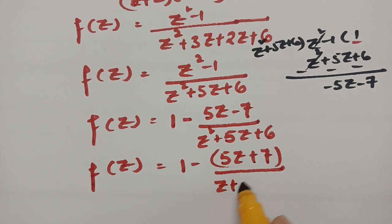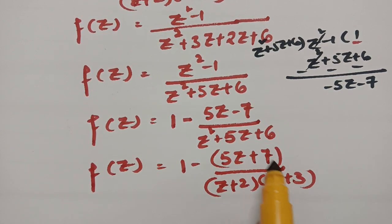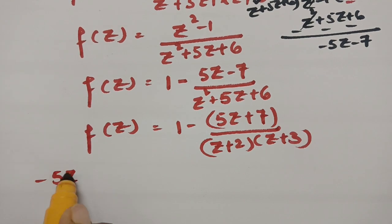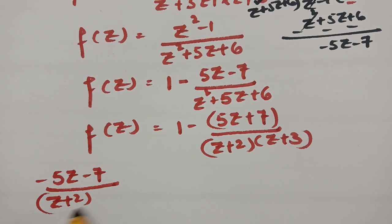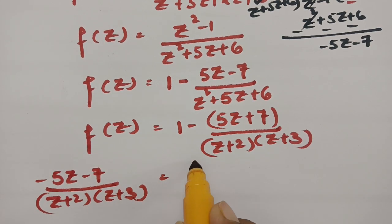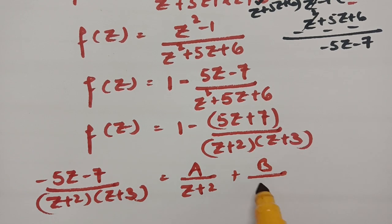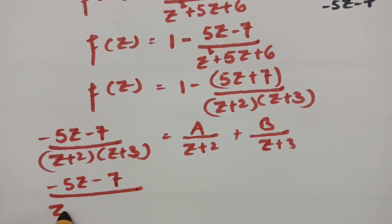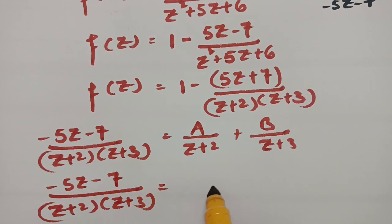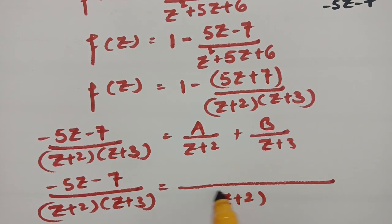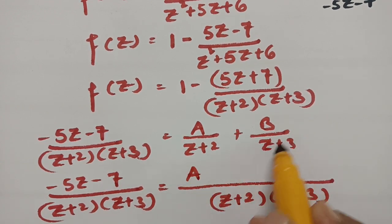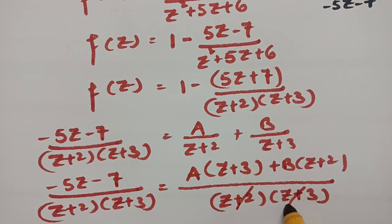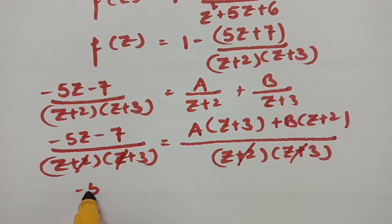Resolving (5z + 7) / [(z + 2)(z + 3)] into partial fractions, we write it as A/(z + 2) + B/(z + 3). Taking LCM, we get (5z + 7) = A(z + 3) + B(z + 2). After cancelling the denominators, the equation becomes minus 5z - 7 = A(z + 3) + B(z + 2).